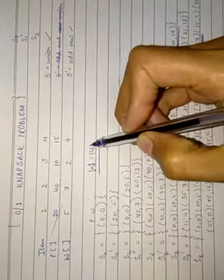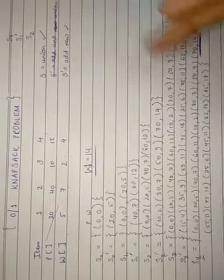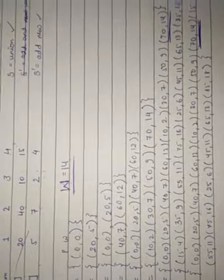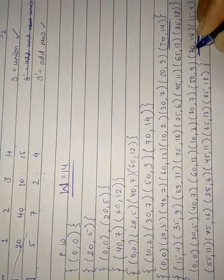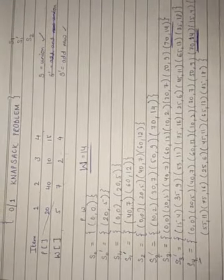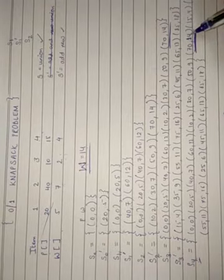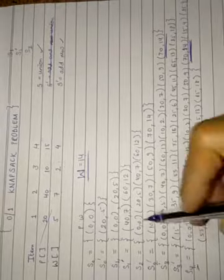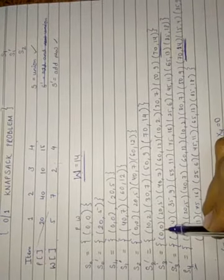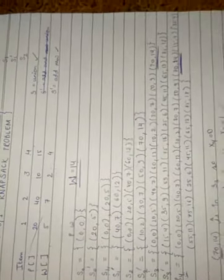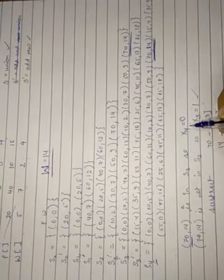Now we need to check — our total knapsack capacity is 14. So in S4, where all items are covered, we need to find a point whose weight is equal to or less than 14. We find the point (70,14) where 70 is the profit and 14 is the weight. Next, we look for (70,14) in S3 — not S3-dash. We find that (70,14) is in S3, so X4 equals 0. For those S values where we find the value, we write that X equals 0.